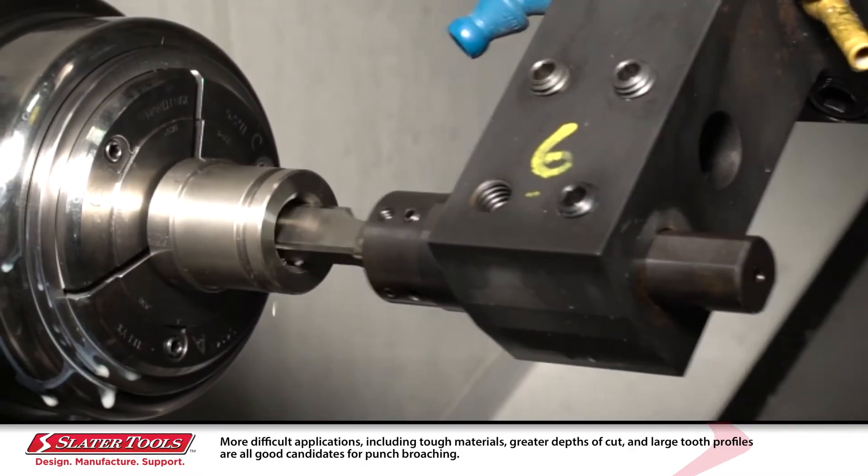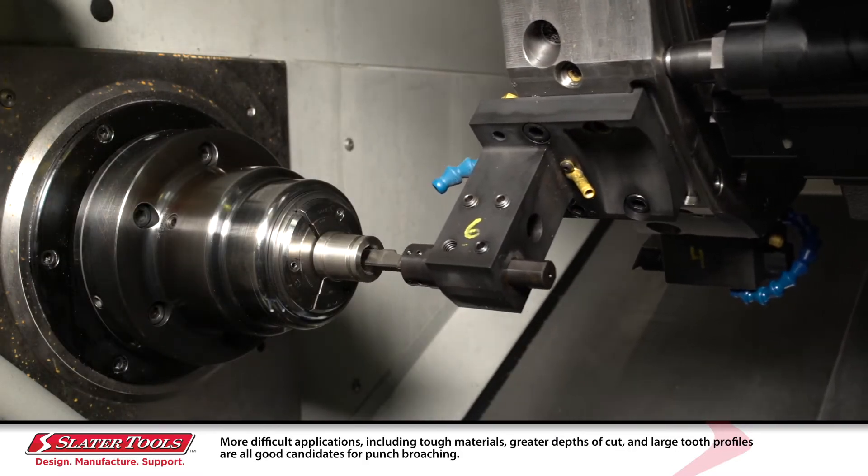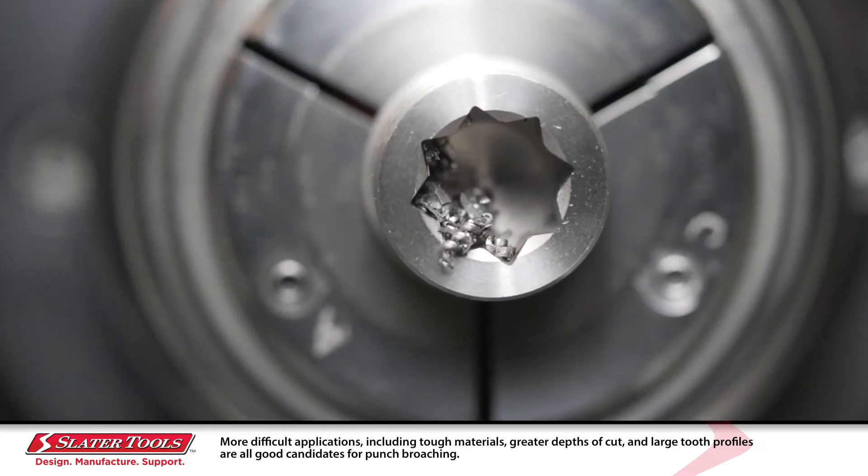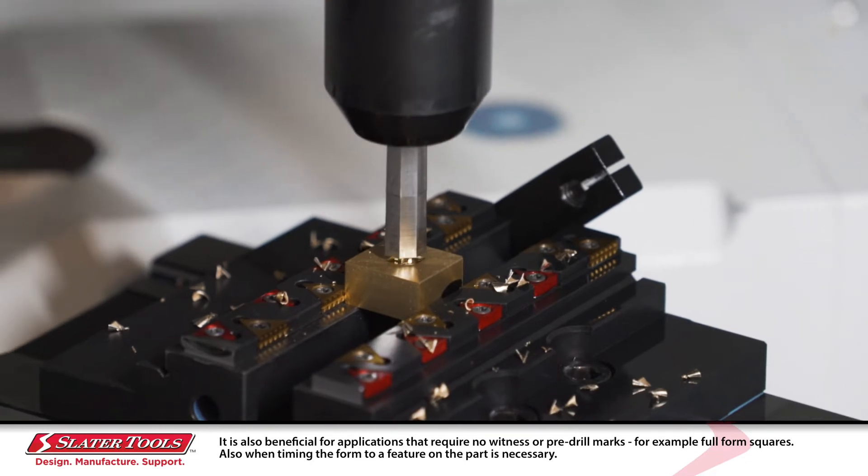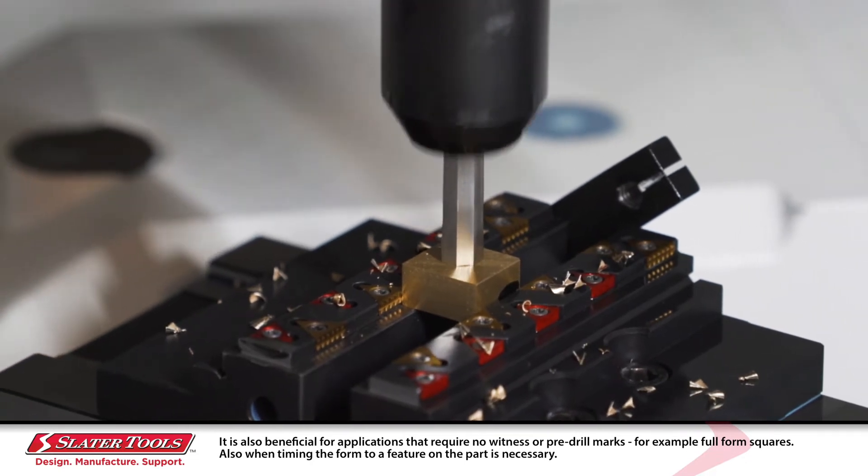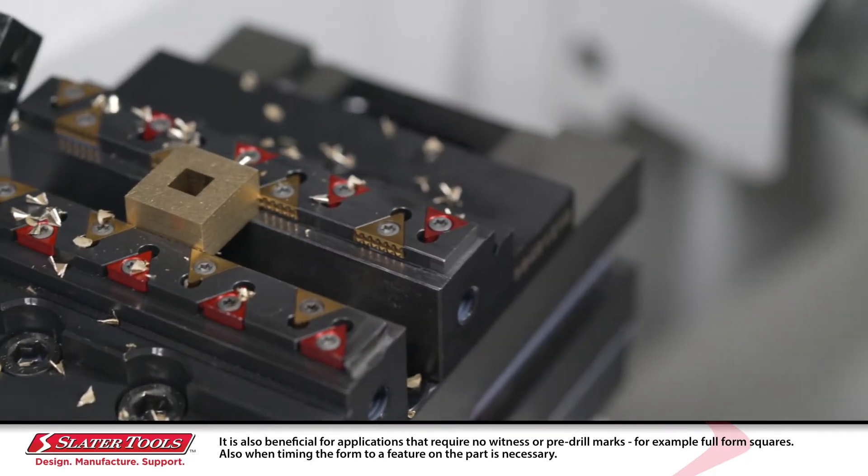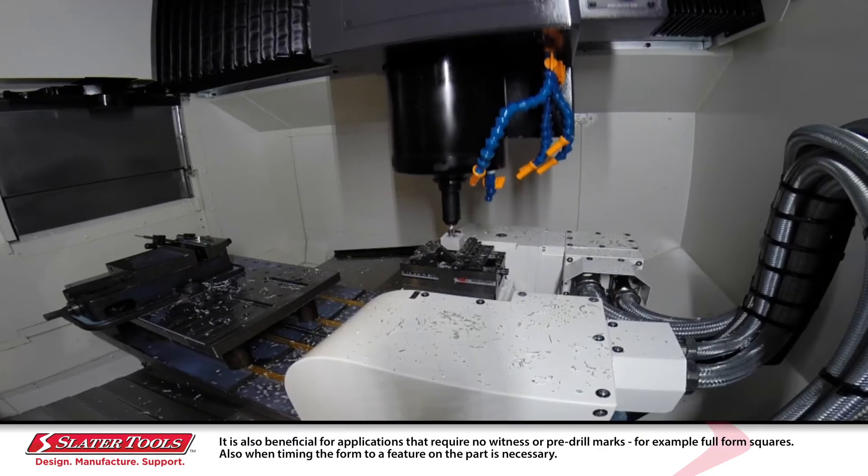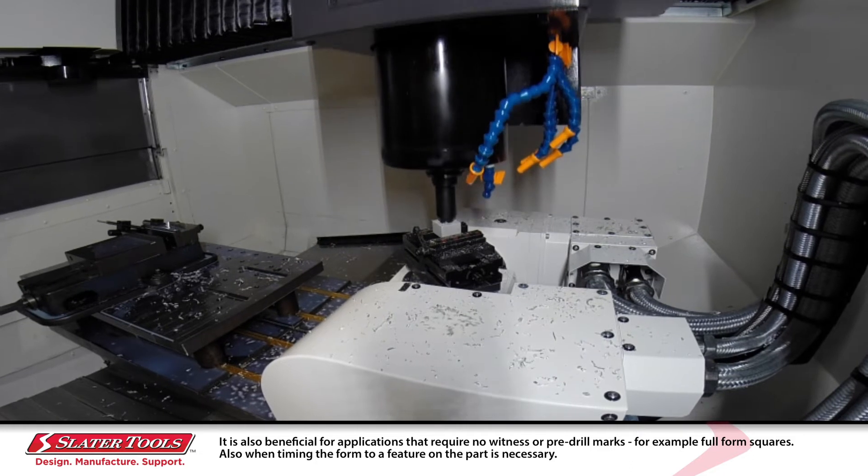More difficult applications including tough materials, greater depth of cut, and large tooth profiles are all good candidates for punch broaching. It is also beneficial for applications that require no witness or pre-drill marks, for example full form squares, and also when timing the form to a feature on the part is necessary.